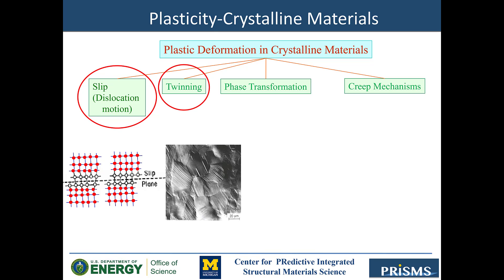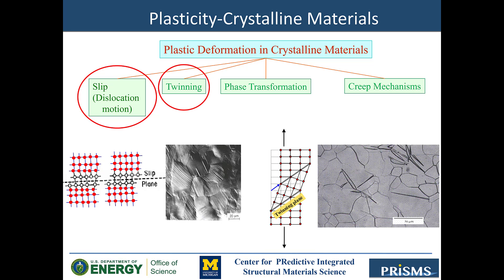In the case of twinning, a portion of the crystal takes up an orientation that is related to the orientation of the rest of the untwinned lattice in a definite symmetrical way. The twin portion of the crystal is a mirror image of the parent crystal or untwinned crystal. The plane of symmetry is called the twinning plane.